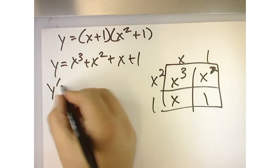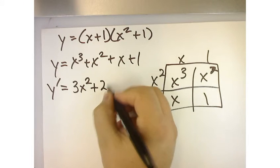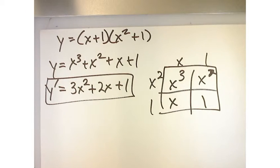Now, if I do y prime, I just use the power rule, which will give me 3x squared plus 2x plus 1. Hey, that's what we got the last time. That makes sense.